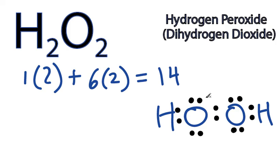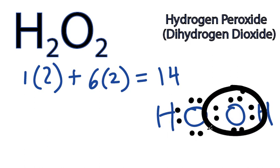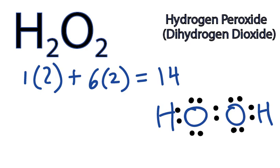We've used all our valence electrons, and you can see that each oxygen has 8 valence electrons, so it has its octets satisfied. The hydrogens are good. That's the Lewis dot structure for H2O2.